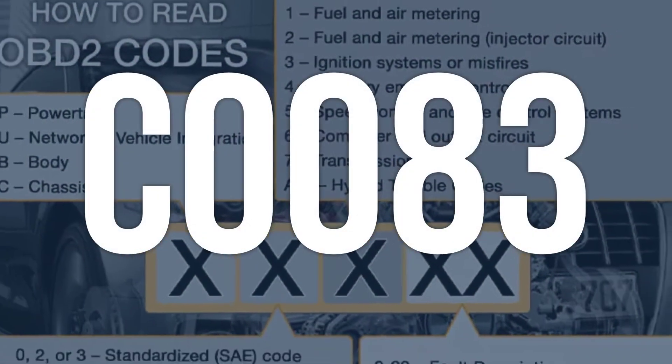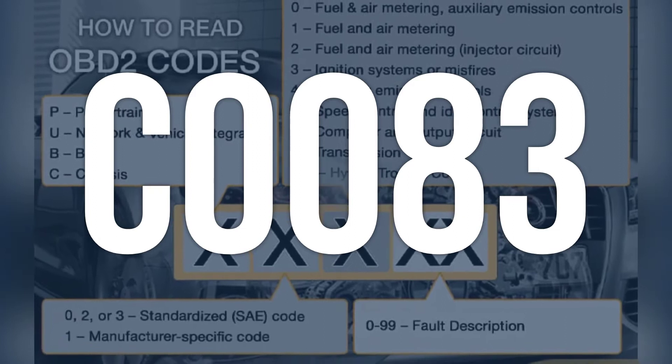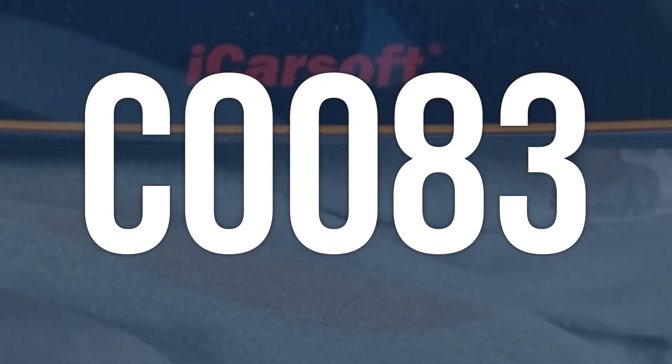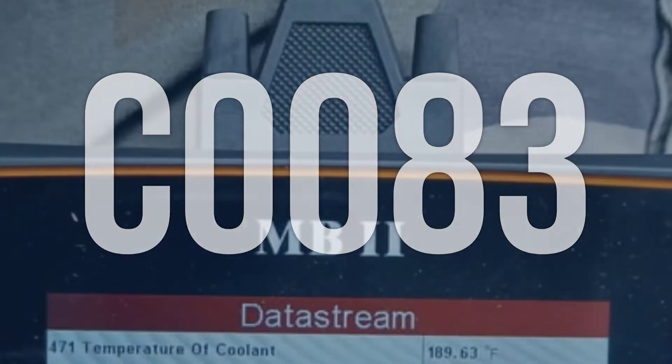OBD-2 fault code C0083 means there is a malfunction with the tire pressure monitor malfunction indicator, subfault.